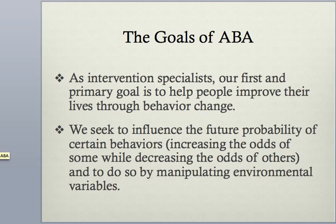The goals of ABA are, first of all, as intervention specialists — which many of you will go on to become — our first and primary goal is to help people improve their lives through behavior change. We look to influence future probabilities of certain behaviors, increasing the frequency of some behaviors and decreasing others. To do so we manipulate environmental variables rather than using techniques such as drugs or surgery or more invasive kinds of interventions. We just rely on changes in the environment.